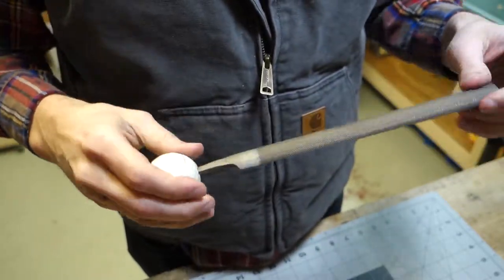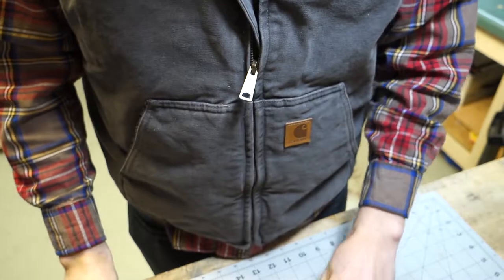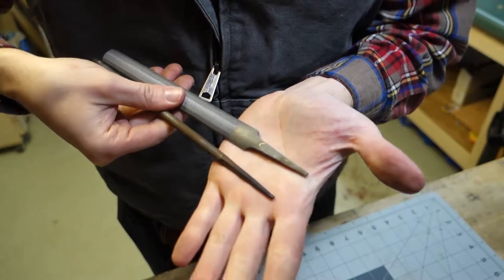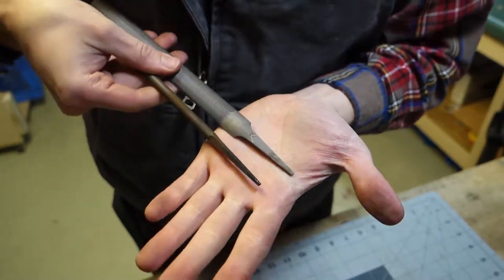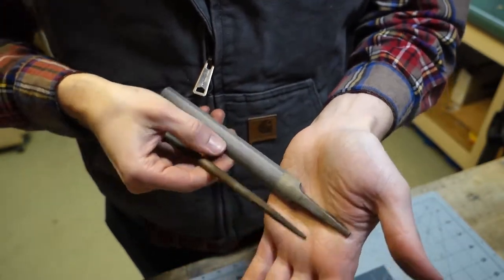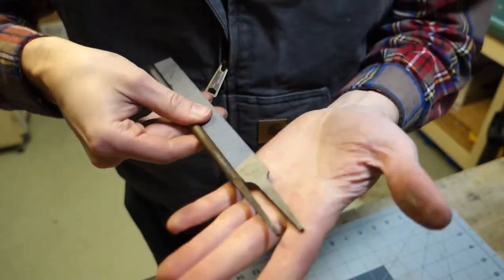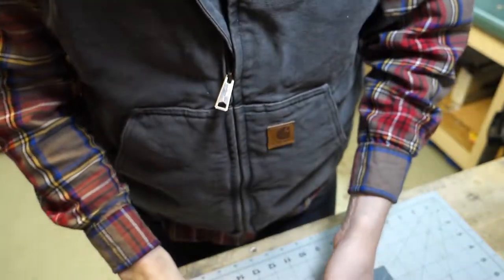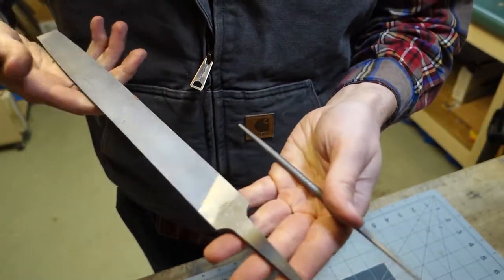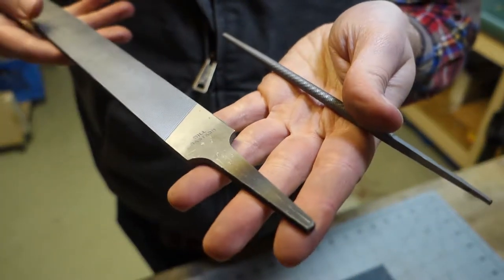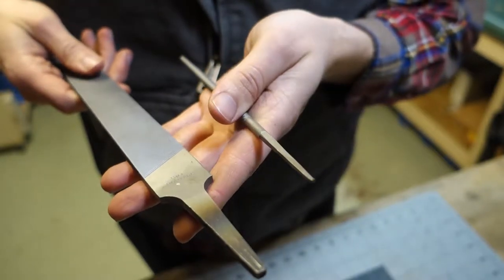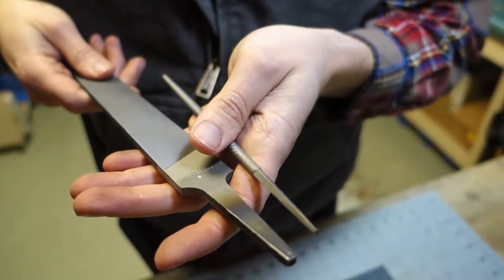I wonder if I should make—see, now different files have different size tangs. So this you know, this particular file has a much wider tang than this round file. And I have this big bastard file, it's a 12 inch bastard file, and it has a much wider tang even than those.